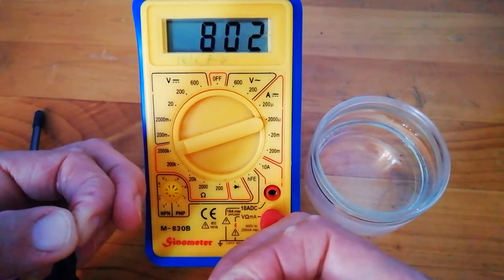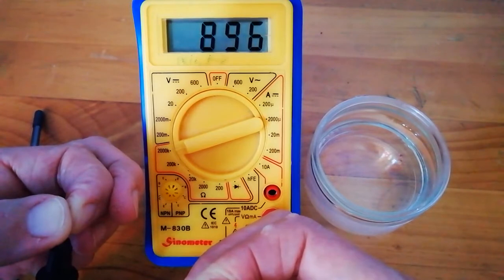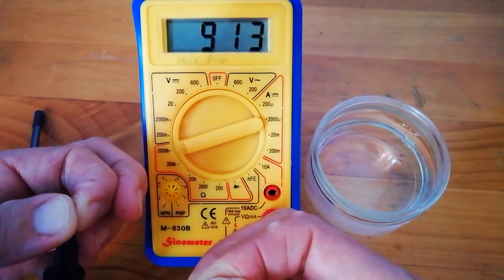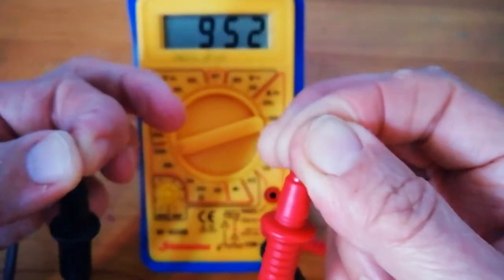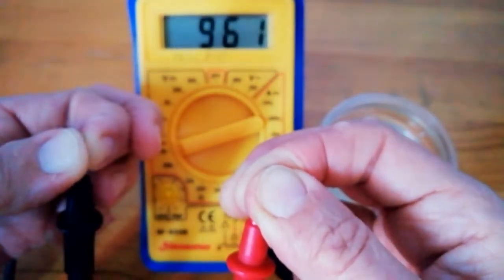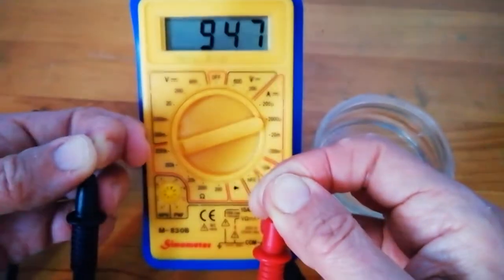When I hold the two probes tightly - and this does vary I'm afraid - but around 800,000, 850,000 ohms, about 900,000 ohms for dry skin. Clutching onto these tight, it's fluctuating a bit, maybe around 950,000, 960,000 ohms when I'm holding the probes with dry skin.